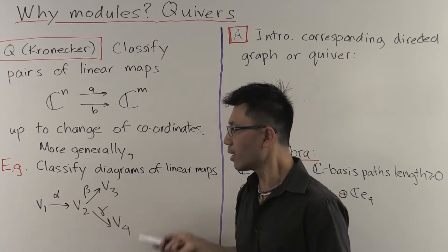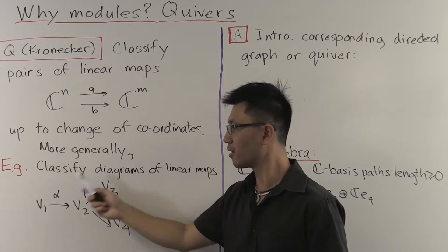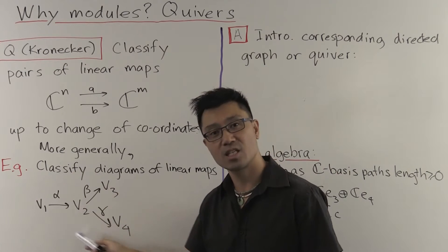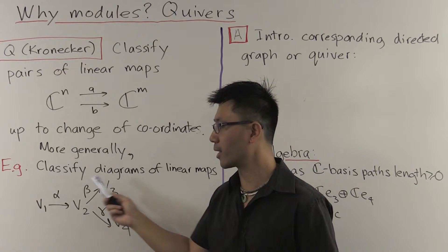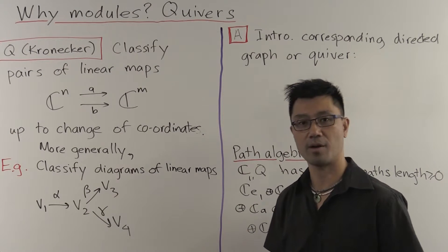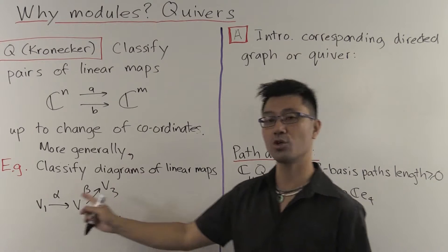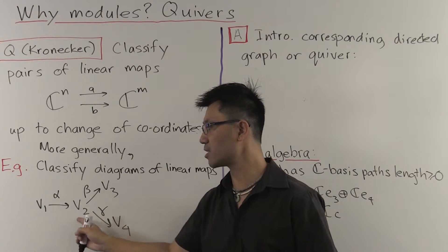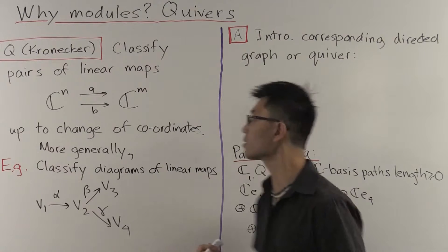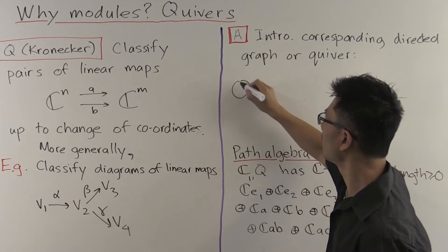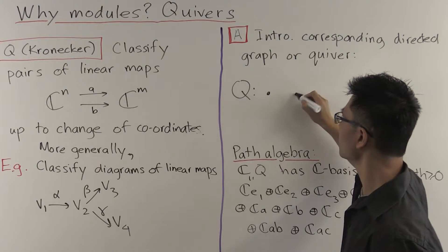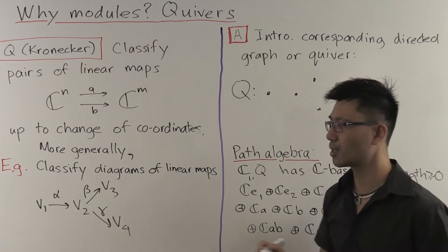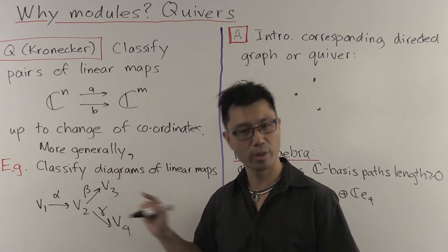So when you look at this picture here, it immediately suggests to you the following directed graph or quiver. What you can do is replace each of these vector spaces with a vertex.